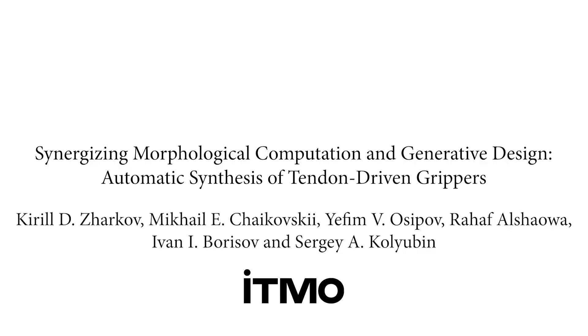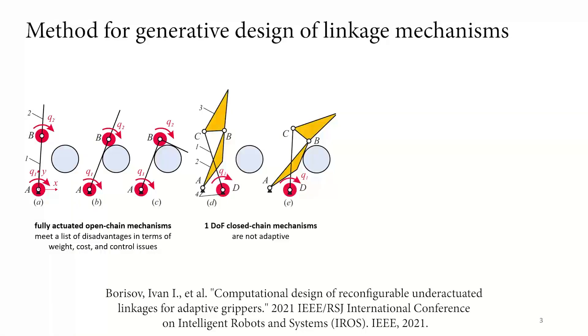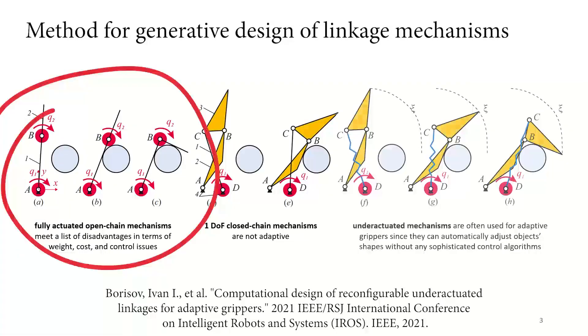We present an algorithm for computational synthesis of underactuated open chain linkages for generative design purposes. Later, we published a general method for linkage synthesis that consists of three steps. Within this paper, we refine the first stage and show the potential for automatic design for underactuated tendon-driven grippers.